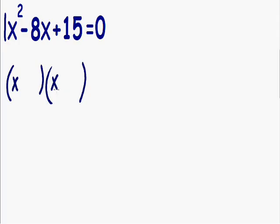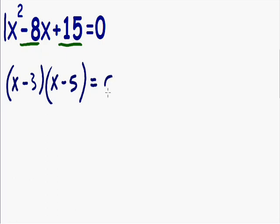Now we need to pick two numbers that multiply to give us positive 15 and also add to give us negative 8. The possibilities are: 1 times 15, negative 1 times negative 15, and negative 3 times negative 5 — all give us positive 15. We need negative 3 and negative 5, because negative 3 times negative 5 gives us positive 15, and negative 3 plus negative 5 gives us negative 8. And of course, this is all equal to zero.